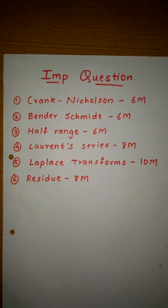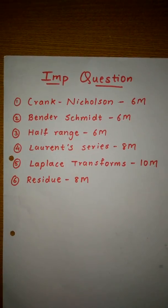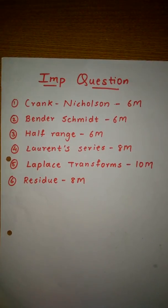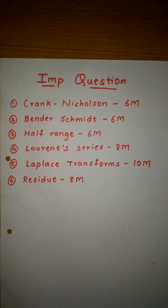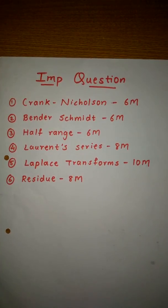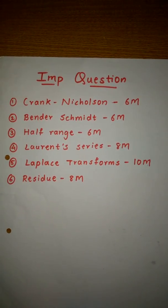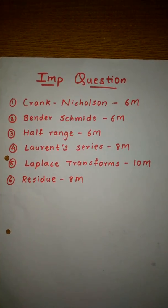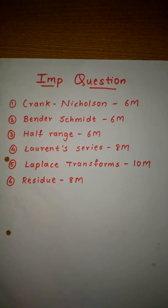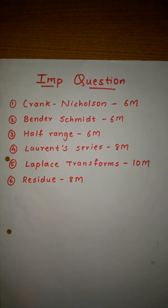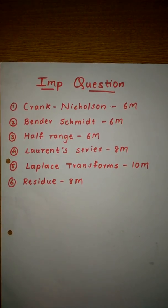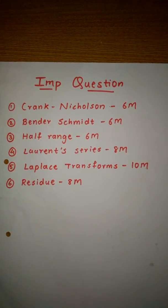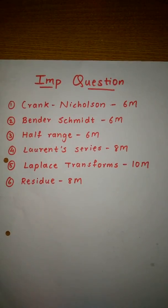The half range series — containing sine, cosine, and ESOX series — is part of Fourier series and comes for 6 marks. Then there is the Laurent series which comes for 8 marks, and the Taylor series also comes for 8 marks — either one of them will appear for 8 marks.